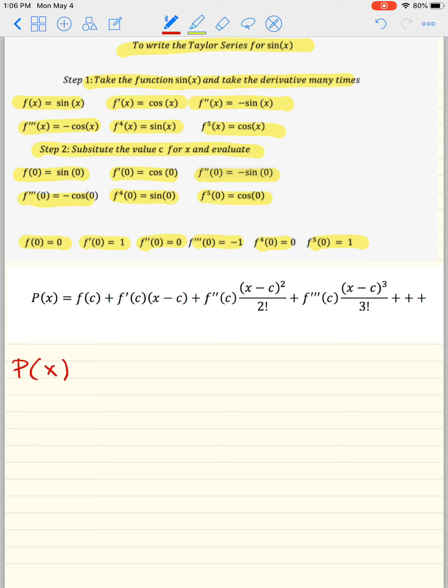So the polynomial, or sine of x will be, we're going to f(c). Well, that's this guy here. So that's going to be 0. You still have to count them.